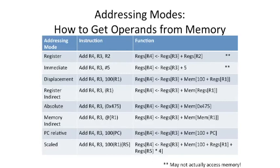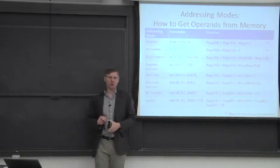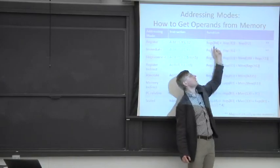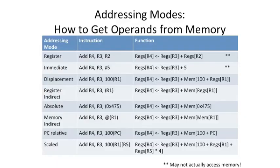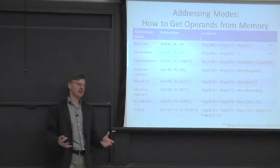Another characteristic the ISA architect needs to think about is how do you access memory — what are the different addressing modes, or how do you get operands from memory? Looking at one example, we have a register-based addressing mode where you can only name two registers and put the result into another register. This is a three-operand format — x86 would only have two. This mode may not actually access any memory if your microarchitecture implements all the registers, but it might if there is no register file and everything is in main memory.